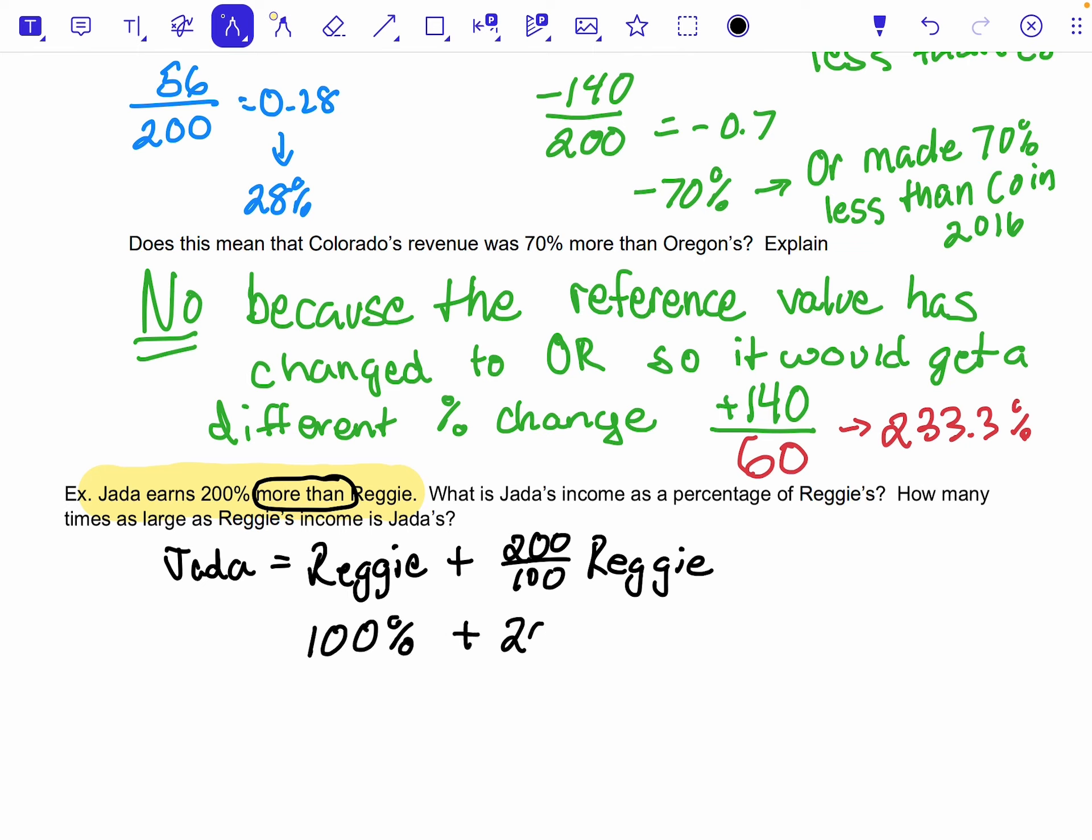Plus the 200% more, which is a total of 300%. So when Jada earns 200% more than, we need to add in that 100% that's already there to the 200% more, and we end up with 300%.